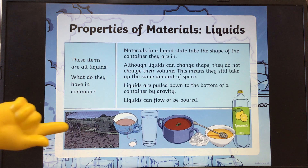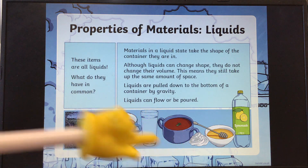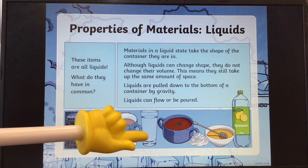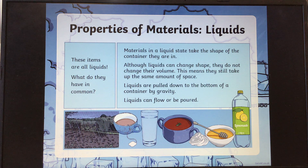Here are the liquids. You should have had all of these down as liquids. Materials in a liquid take the shape of the container they are in, so a liquid can change shape. They do not change their volume — so if we poured this glass of water into a bowl, it might change shape, but it's not going to change the amount of water. This means that they still take up the same amount of space. Liquids are pulled down to the bottom of the container by gravity and they can flow or be poured.